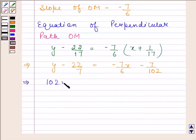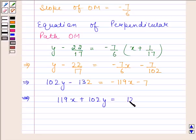Multiplying this equation by 102, we get 102y minus 132 equals minus 119x minus 7. Now this implies 119x plus 102y equals 125. Hence, the required equation of shortest path is 119x plus 102y equals 125.